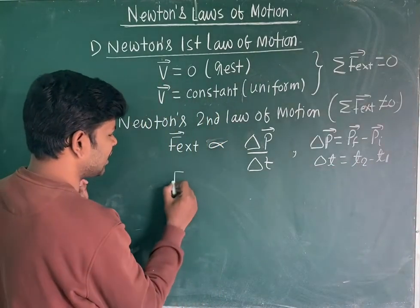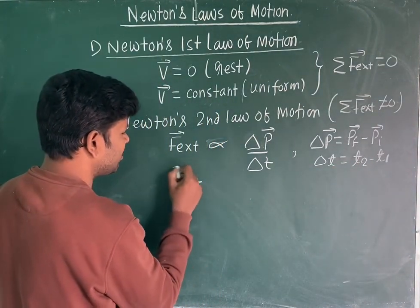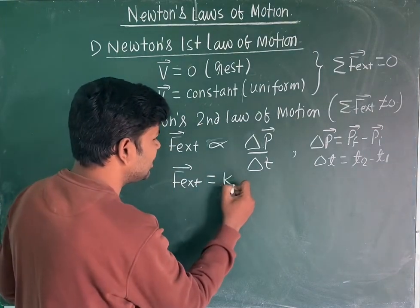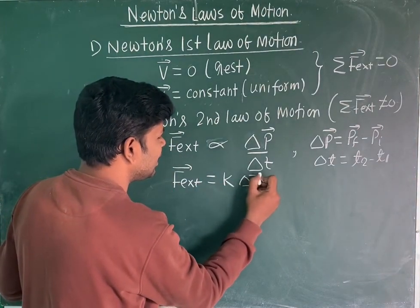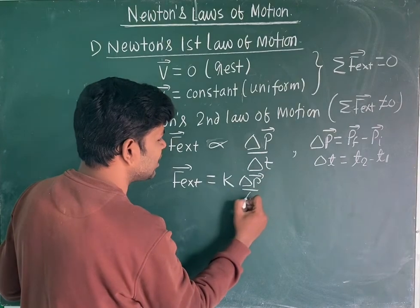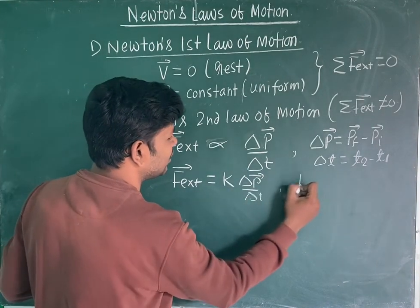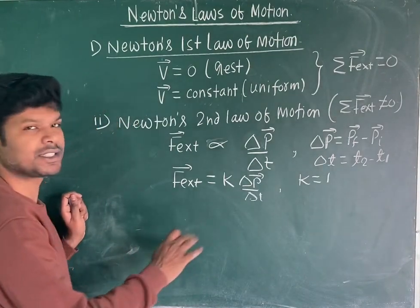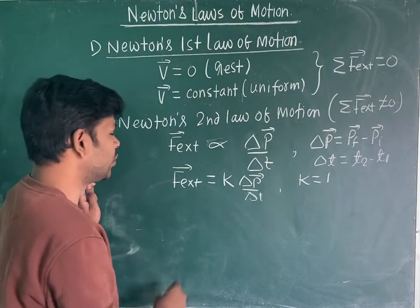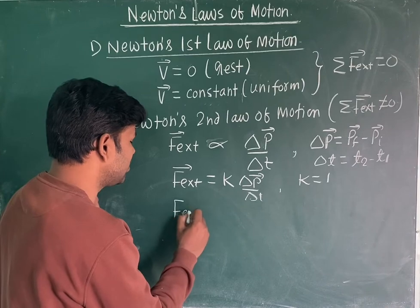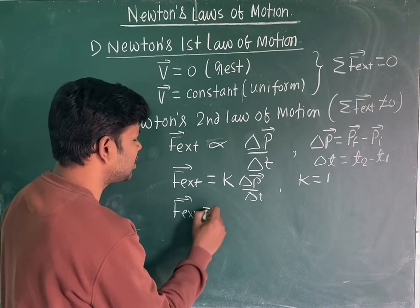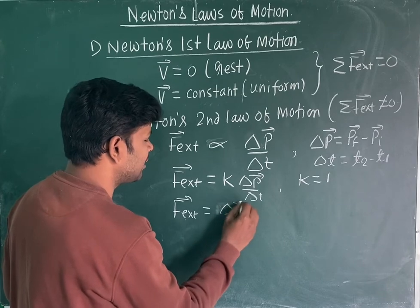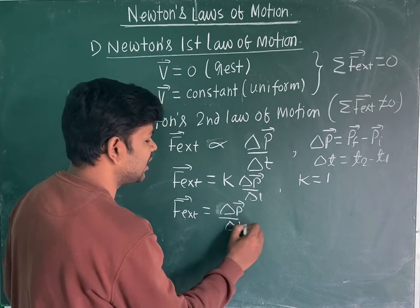F external, when we remove the proportionality constant, there is a proportionality constant K. The value of K in SI units is equal to 1 — it is experimentally and theoretically calculated that K equals 1. So the net external force will be equal to ΔP upon ΔT.